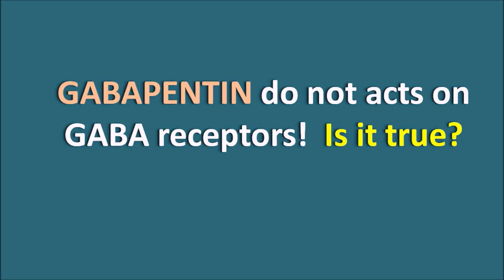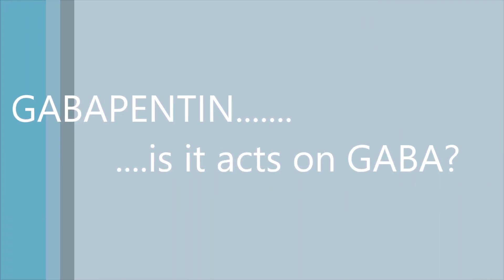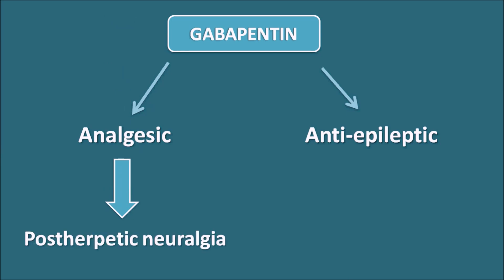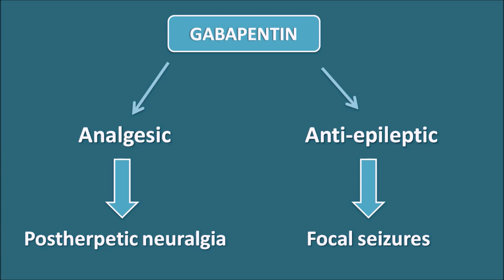Gabapentin does not act on GABA receptors. Is it true? Gabapentin is one of the drugs used as an analgesic as well as an anti-epileptic. It can be used as an analgesic in conditions like post-herpetic neuralgia, where pain produced after herpes infection is controlled by Gabapentin. It can also be used as an anti-epileptic, particularly in the treatment of focal seizures. Let us see all these interesting facts in this video.